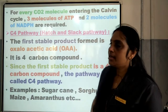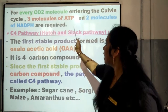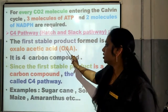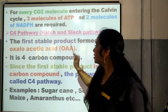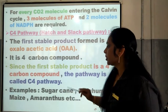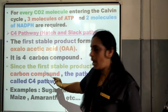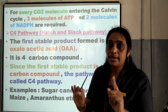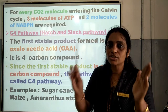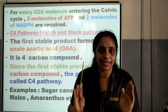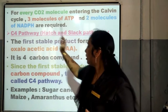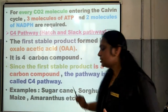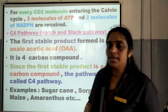Now the next cycle is the C4 pathway, which is also known as the Hatch and Slack pathway. The first stable product formed in this pathway is oxaloacetic acid, also known as OAA. This oxaloacetic acid is a 4-carbon compound. Since the first stable product is a 4-carbon compound, therefore the pathway is known as C4 pathway. In the structure of oxaloacetic acid, 4 carbons are present — that is why this cycle is also known as C4 pathway. This pathway is taking place in sugarcane, sorghum, maize, amaranthus, etc.